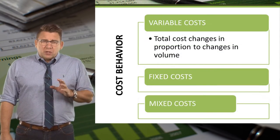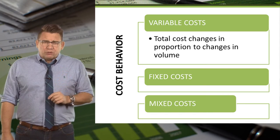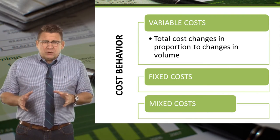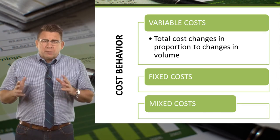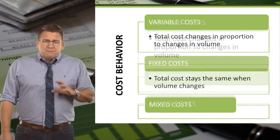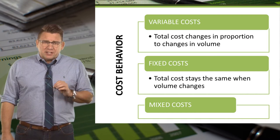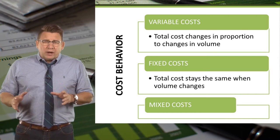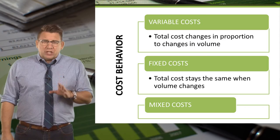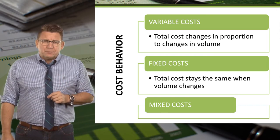Variable costs change in total in direct proportion to changes in volume. As volume increases, total variable costs increase. Fixed costs stay constant in total over a wide range of volume levels, so as volume changes, fixed costs do not.